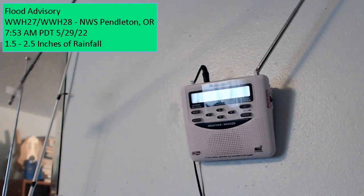Flood advisory for the following county: Umatilla, Oregon. Flood advisory in effect until 3 p.m. Pacific Daylight Time this afternoon.